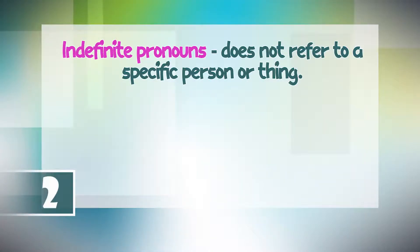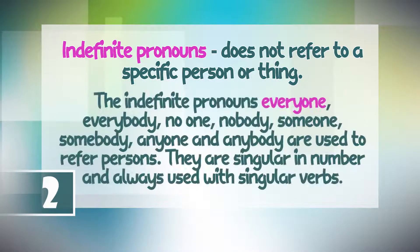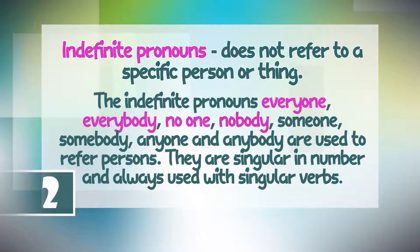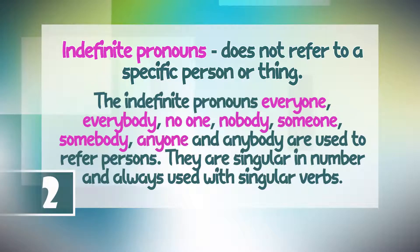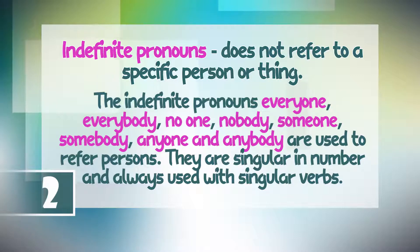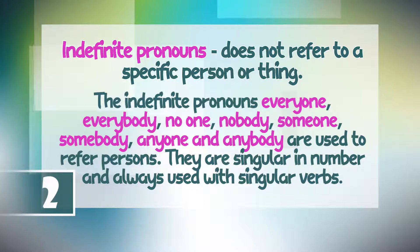Indefinite pronouns do not refer to a specific person or thing. The indefinite pronouns everyone, everybody, no one, nobody, someone, somebody, anyone, and anybody are used to refer to persons. They are singular in number and always used with singular verbs.